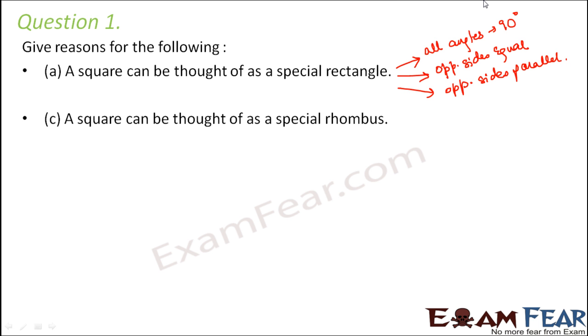These are some of the criteria needed to become a rectangle. We see that a square satisfies all the criteria to become a rectangle. In fact, besides that, a square has some extra features. For example, in a square all the sides are also equal and all the diagonals are also equal. So yes, a square can be thought of as a special rectangle.